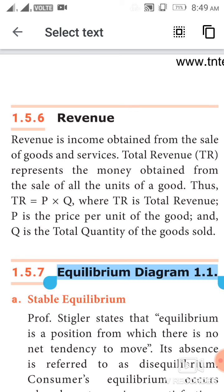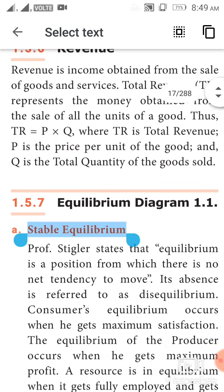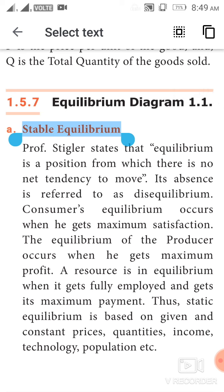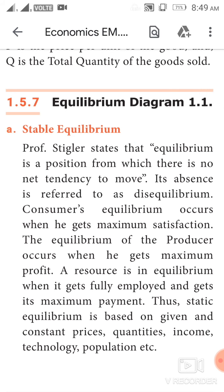Equilibrium. Prof. Stigler states that equilibrium is a position from which there is no net tendency to move. Its absence is referred to as disequilibrium. Consumer's equilibrium occurs when he gets maximum satisfaction. The equilibrium of the producer occurs when he gets maximum profit. A resource is in equilibrium when it is fully employed and gets maximum payment.